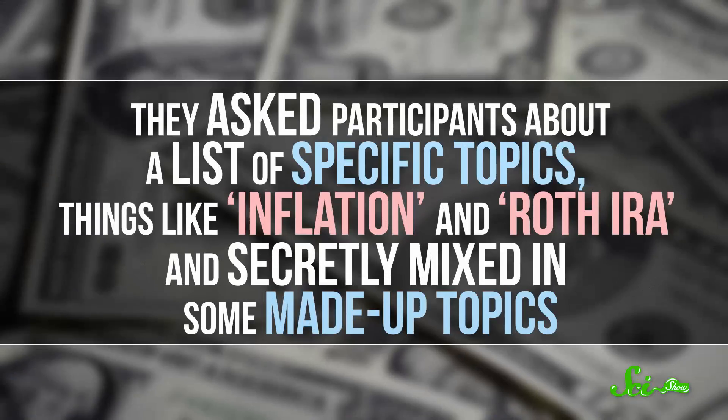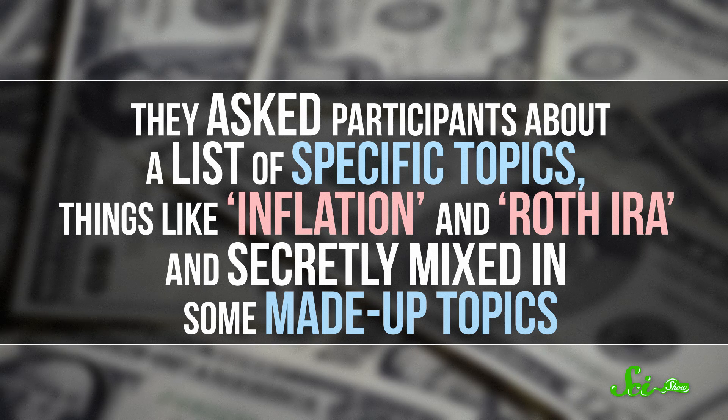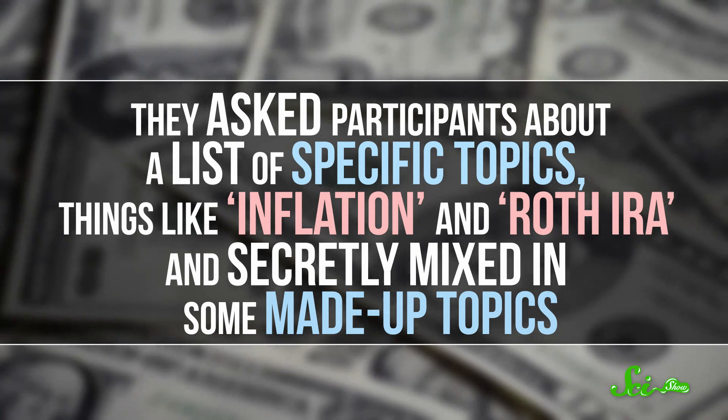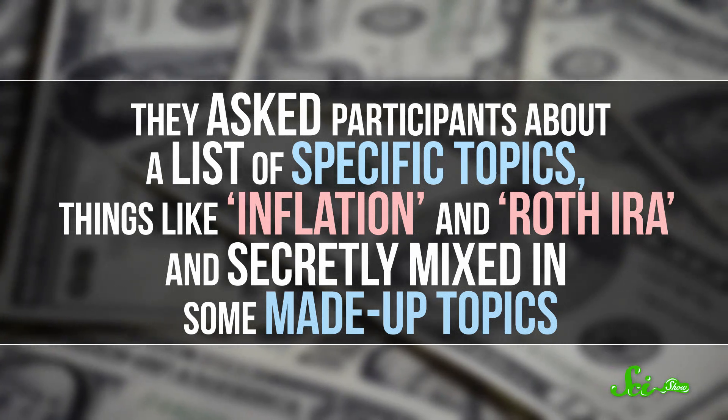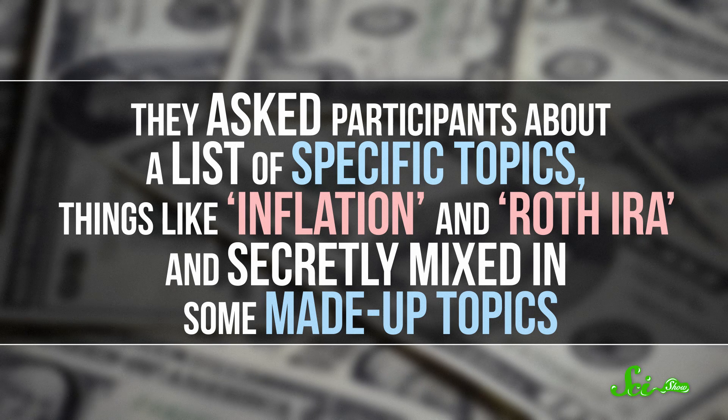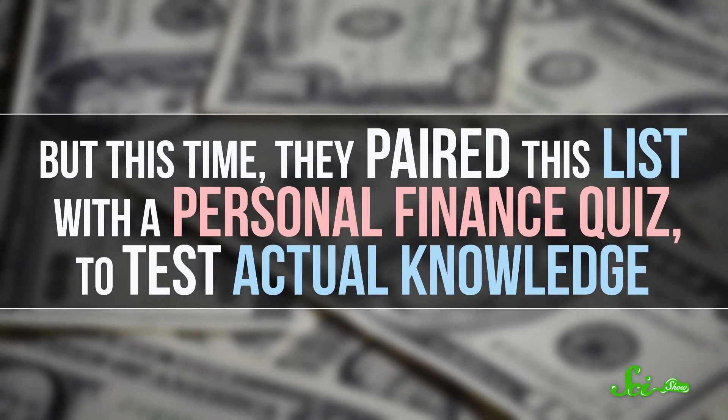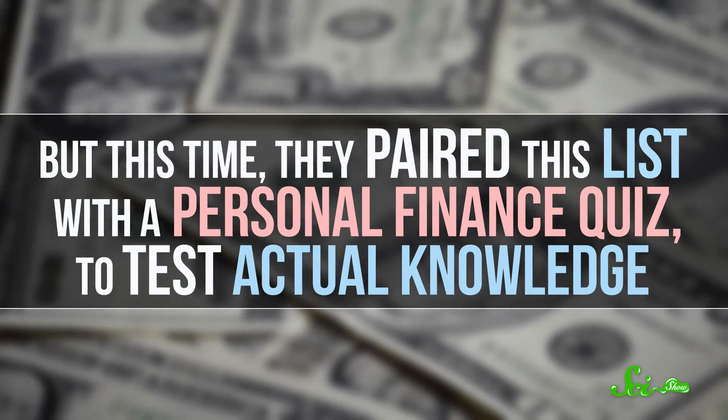So to figure out whether people with actual knowledge were still over-claiming, the researchers did a slightly different study involving personal finance topics. Again, they asked participants about a list of specific topics, including things like inflation and Roth IRAs, and secretly mixed in some made-up topics. But this time, they paired the list with a personal finance quiz to test actual knowledge. So instead of just checking a box saying that you know what a Roth IRA is, you would have to answer a question to prove it, like whether or not it's tax-deferred.